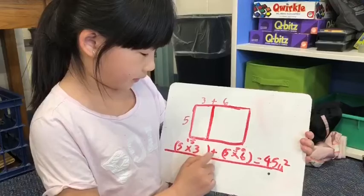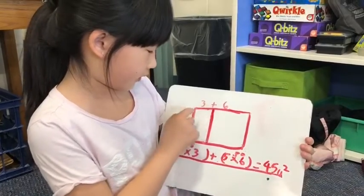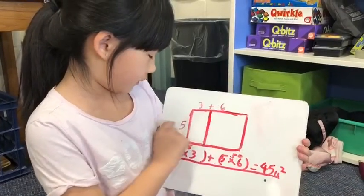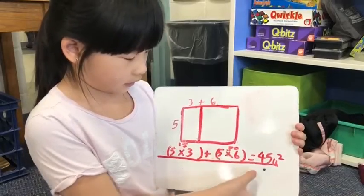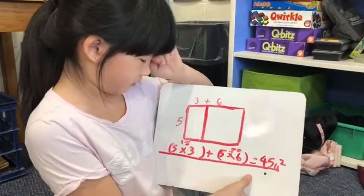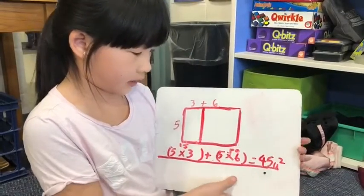Then you have to multiply and get the answer. I got 15, and then you put a plus in the middle and do the same thing with the different number. Six times five, and then you get 30. Then you add 15 and 30 up, and you get 45.